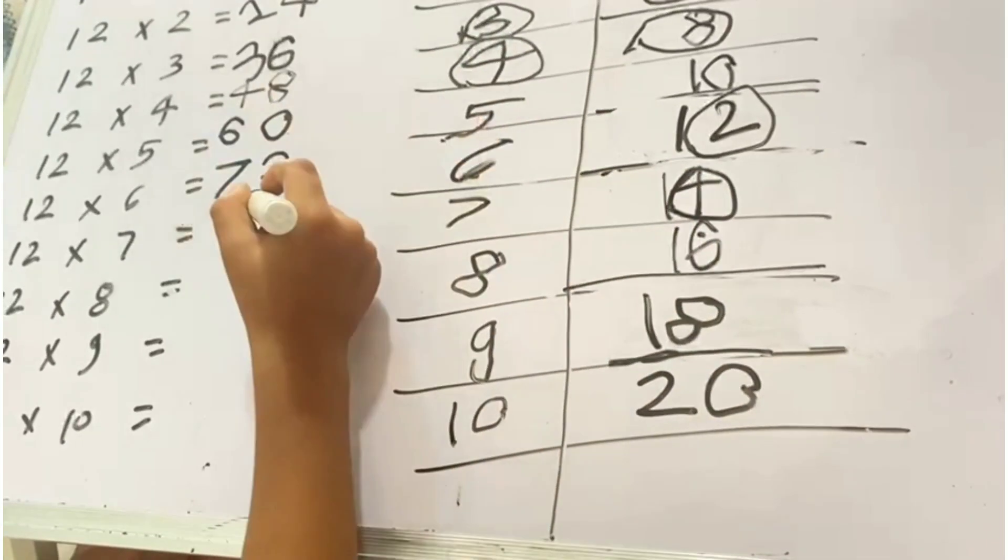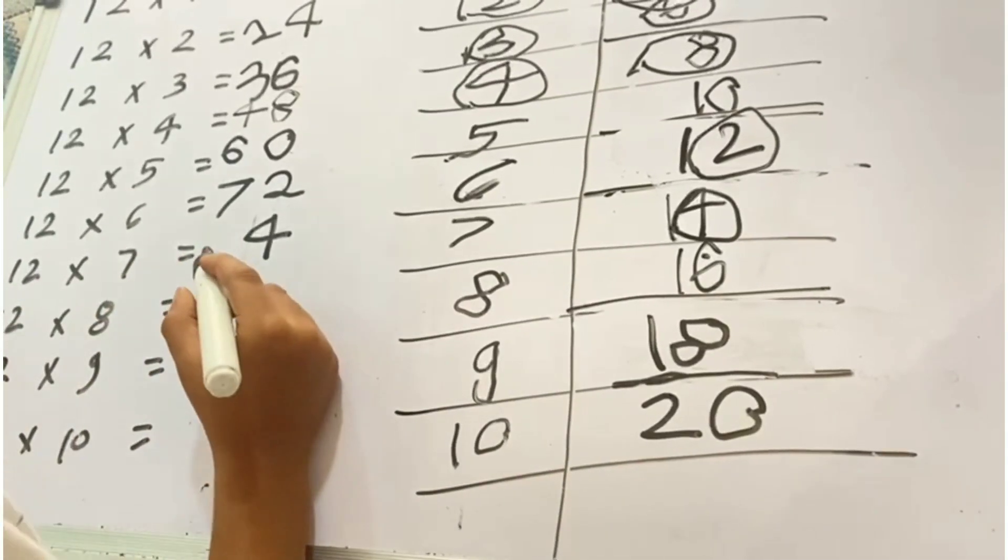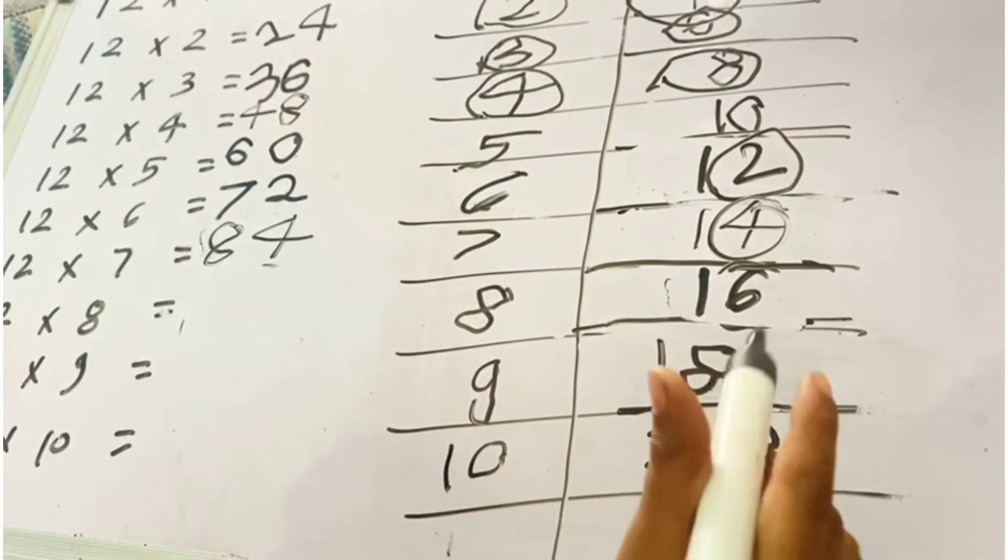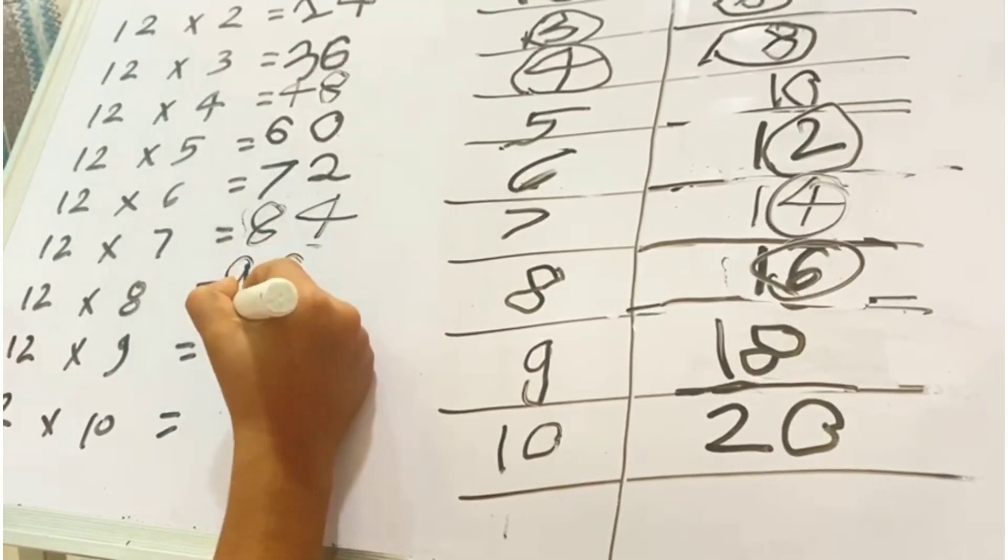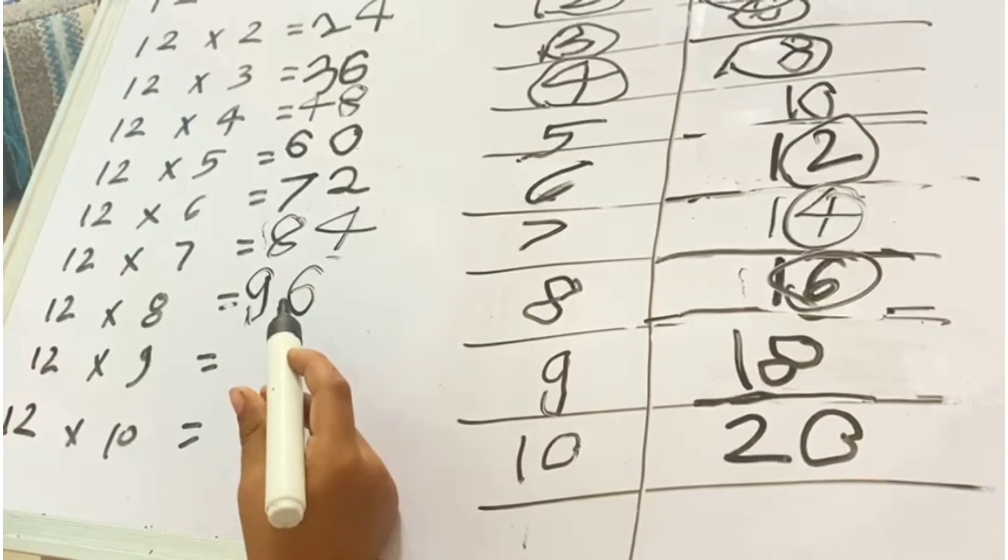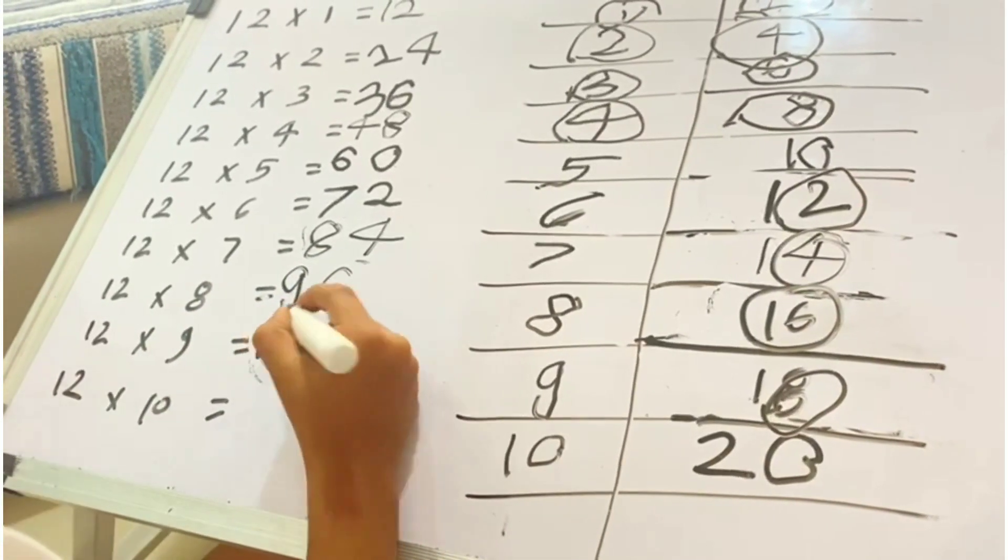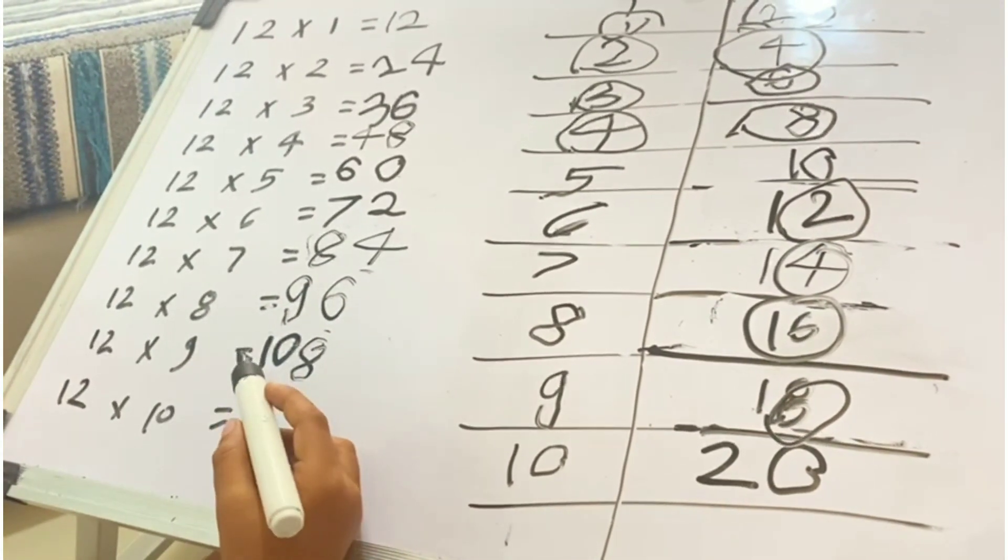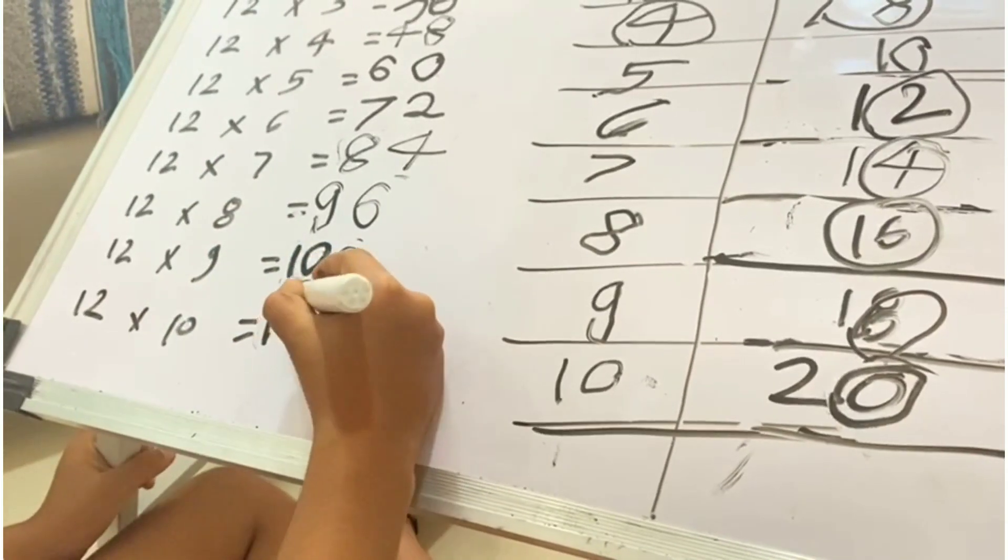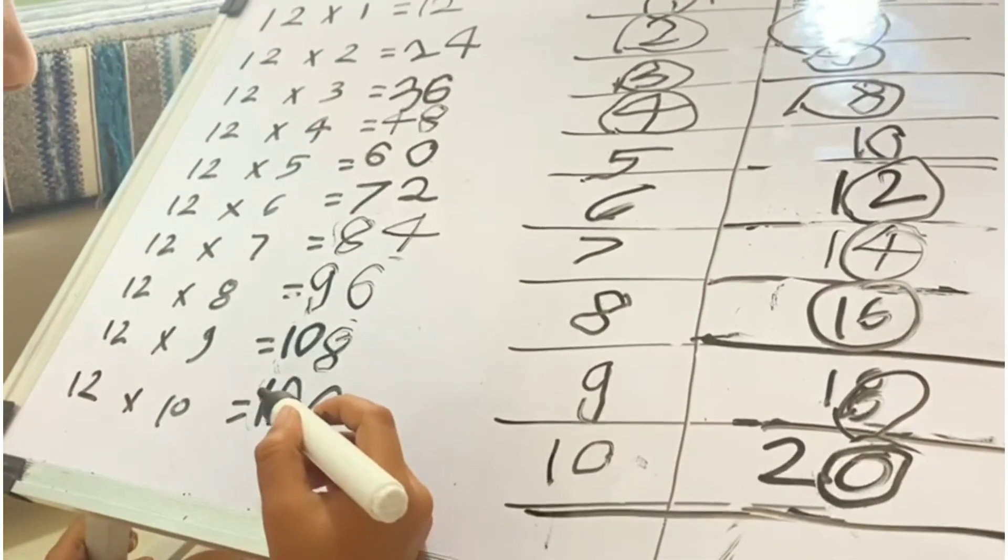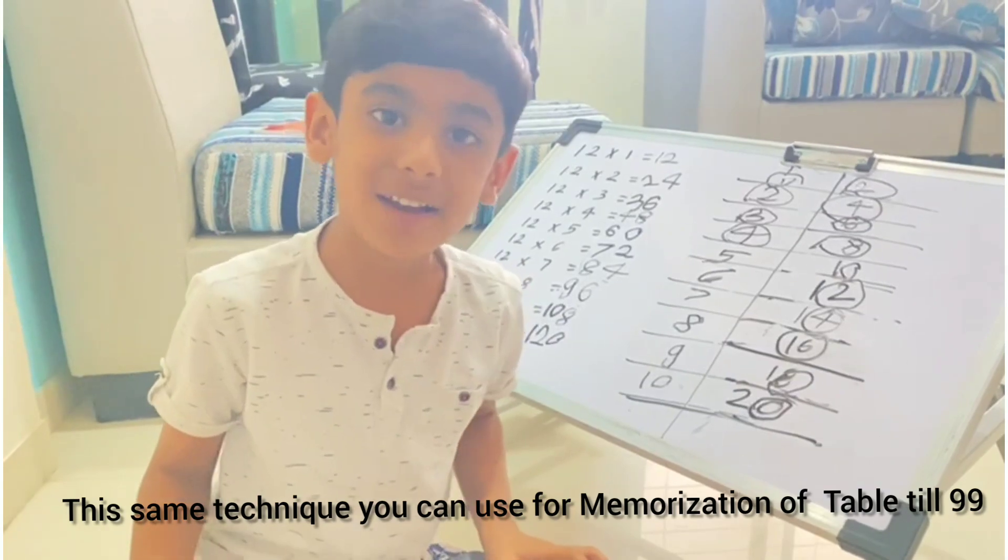7 plus 1, 8. This 6 right here, 8 plus 1, 9. 12 eights are 96. This 8 right here, 9 plus 1, 10. 12 nines are 108. This 0 right here, 10 plus 2, 12. 12 tens are 120. Like this you can memorize all the tables.